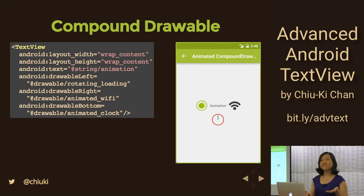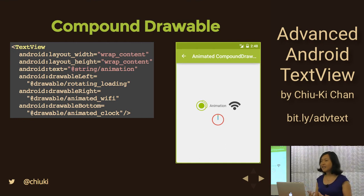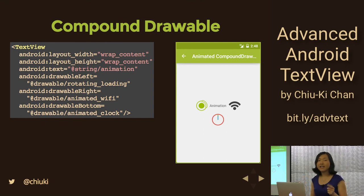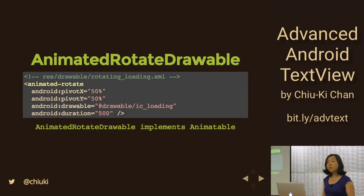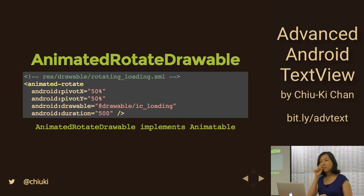There's something more to this because we are at the Advanced Android TextView talk. Notice the name of the drawables — they're verbs: rotating, animated, and animated again. Right now if you just do it in XML it will not move, but we can actually animate these compound drawables. The rotating_loading XML file, instead of a direct PNG, is an animated rotate XML file that tells Android to load a drawable, set the pivot point at the middle, allow it to rotate, and set a duration.